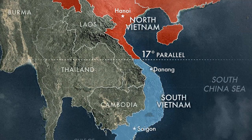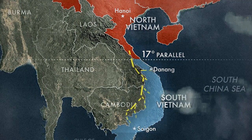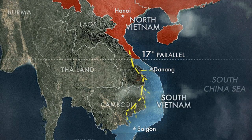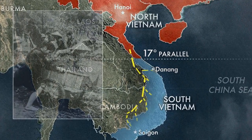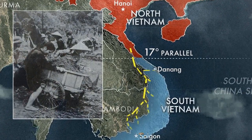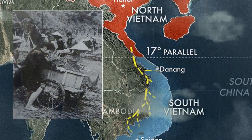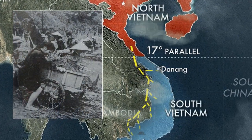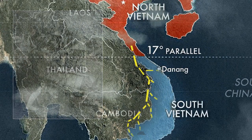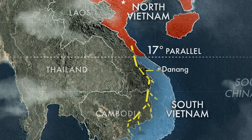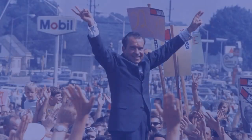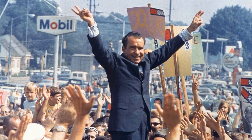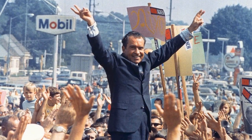Hundreds of thousands of North Vietnamese traveled along the Ho Chi Minh Trail — a difficult path throughout the jungle forests and mountains — to carry out the surprise attacks. That same year in 1968, Richard Nixon won the US presidential election largely on a promise to end the war in Vietnam.